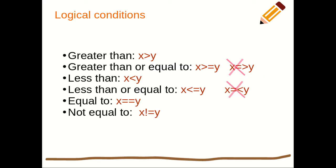Before we get to control structures, we need to understand what logical conditions are and how they help us work with control structures. The first one is greater than — that is, x greater than y. We evaluate if the value x is greater than y. Then we have greater than or equal to, written as x >= y. You can never write it the other way — that's going to give you an error.